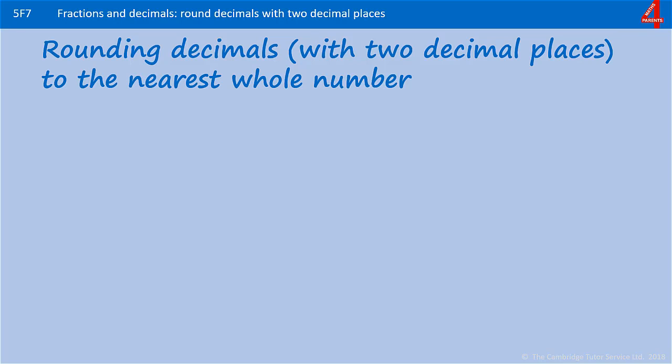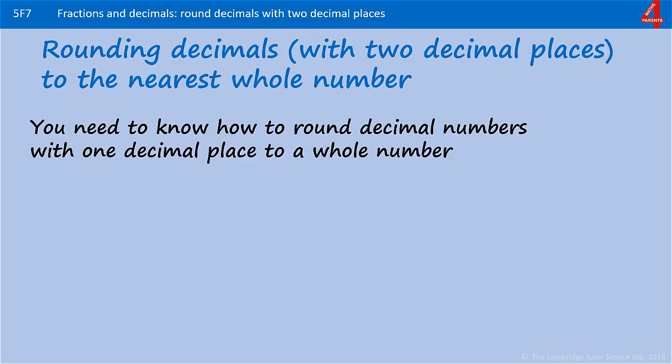Here we'll be rounding decimal numbers with two decimal places to the nearest whole number. To do this it's a good idea to have already seen the video on rounding decimal numbers with one decimal place to a whole number.